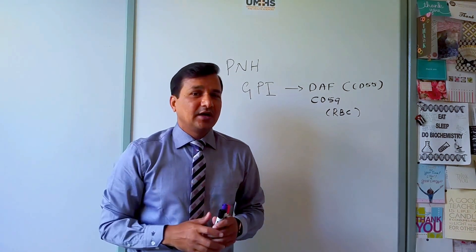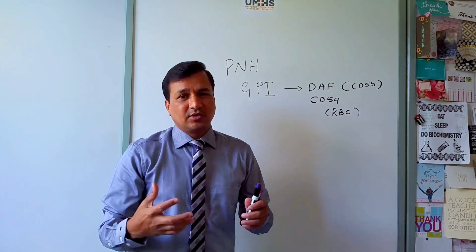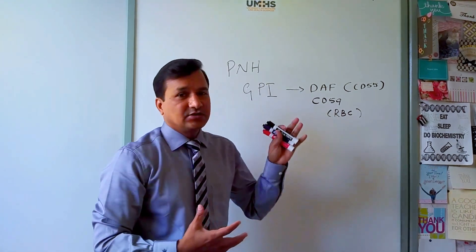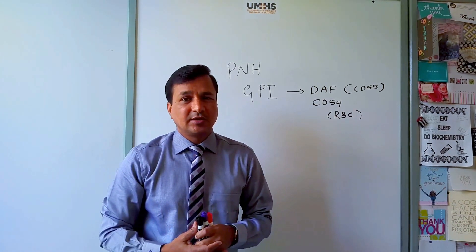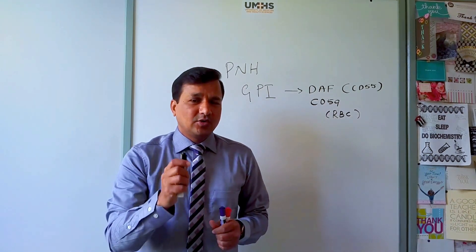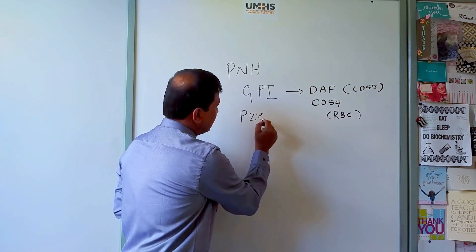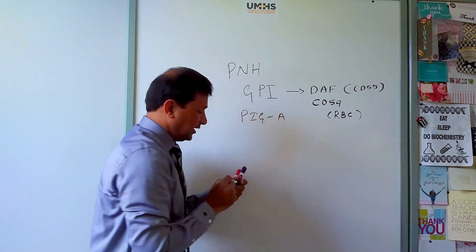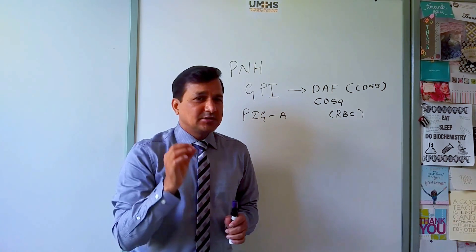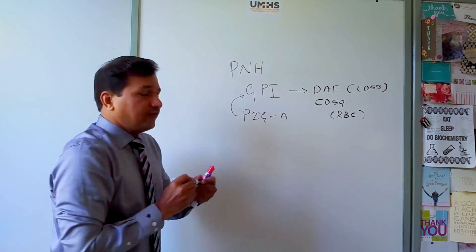Other proteins that use GPI to bind to the plasma membrane include alkaline phosphatase, acetylcholinesterase, and 5-prime nucleotidase. GPI itself is coded by a gene called PIG-A — the phosphatidylinositol glycan A gene.